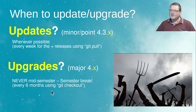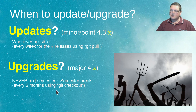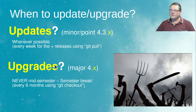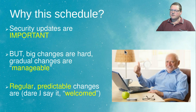Every six months you're going to use git checkout to check out a new branch instead of git pull, which you'd use for updates. That's how you can find the newer version of Moodle. So why am I so fussy about this particular schedule?